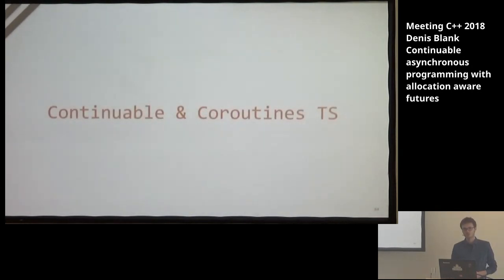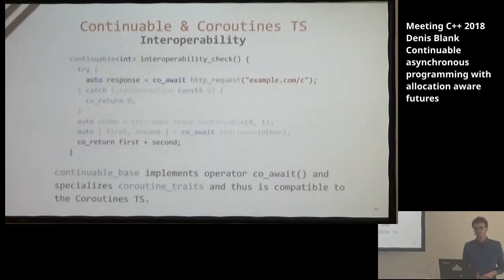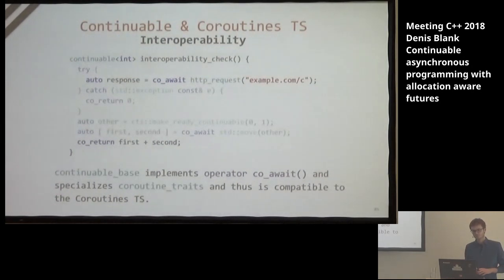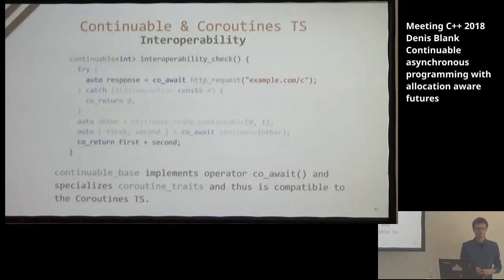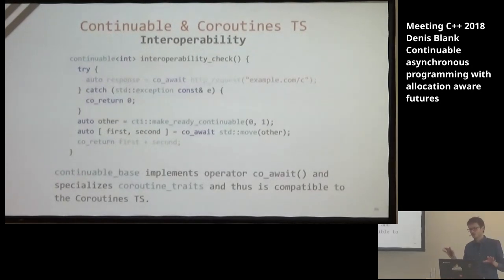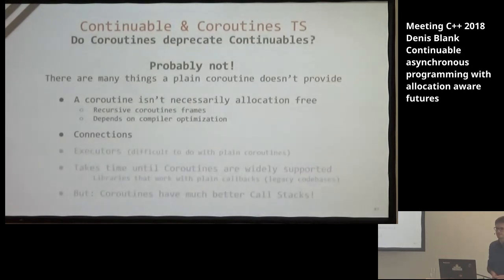Last but not least, I want to talk about Continuable and the Coroutines TS. Interoperability with coroutines is quite good because we can resume the current coroutine when a Continuable has finished its work via co_await, and resolve a Continuable when finishing the current coroutine frame through co_return. This works because ContinuableBase implements operator co_await and specializes the coroutine traits, making it compatible with the Coroutine TS. Exception propagation also works with coroutines.